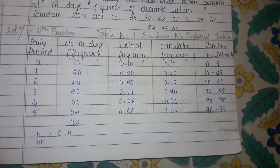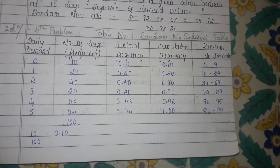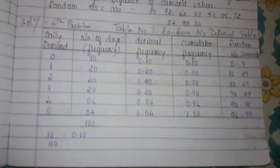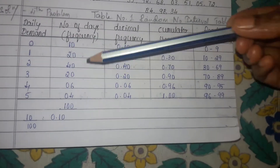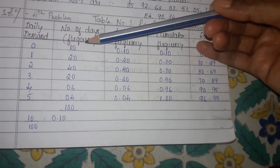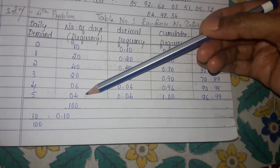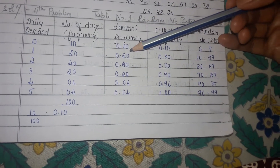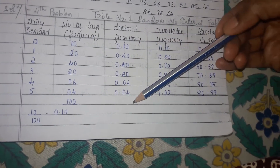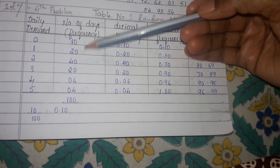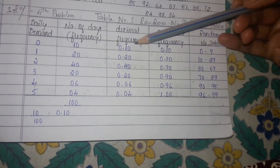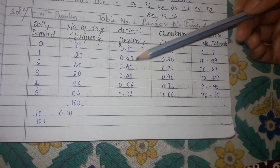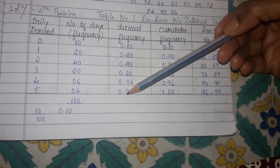Now you will have to work out the decimal frequency column. What you need to do is take the total of this column and divide each of these frequencies by this total value, and you arrive at the decimal places. So 10 divided by 100, 20 divided by 100 will give you 0.2, 40 divided by 100 will give you 0.40, and so on.